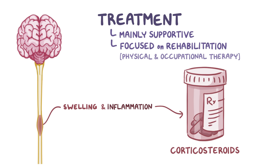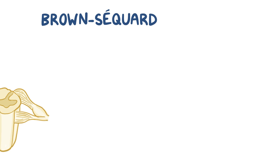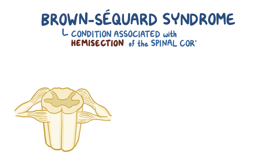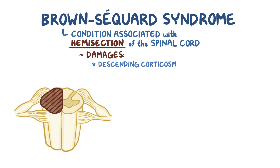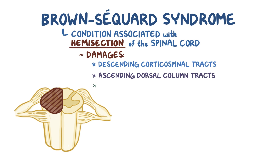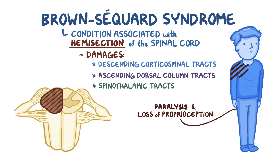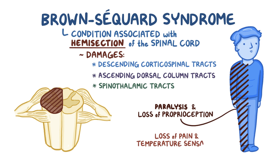As a quick recap, Brown-Séquard syndrome is a condition associated with hemisection of the spinal cord, which usually damages descending corticospinal tracts, ascending dorsal column tracts, and spinothalamic tracts. The result is paralysis and loss of proprioception on the same side as the injury or lesion, and loss of pain and temperature sensation on the opposite side of the lesion.